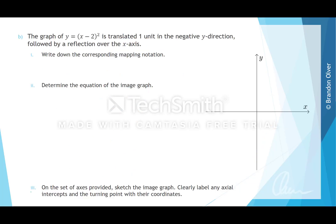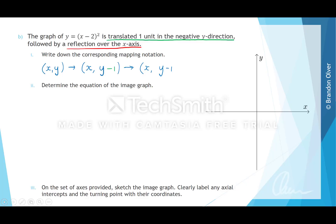For part B, we're going to take the same graph but reverse the order of transformations. The first thing that happens is a translation of one unit in the negative y direction, followed by a reflection over the x-axis. For part 1, we want to write down the corresponding mapping notation. So we have x, y mapping to: the x value is unchanged, and for y, a translation of one unit in the negative y direction gives y minus 1. For the second part, x remains unchanged and we still have y minus 1, but the reflection over the x-axis makes all of that negative.